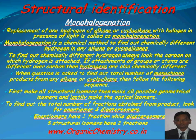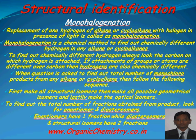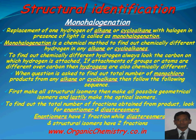Third, monohalogenation: replacement of one hydrogen of an alkyl or cycloalkyl with a halogen in the presence of light is called monohalogenation. Monohalogenation is a chemical method to find out chemically different hydrogens in any alkyl or cycloalkyl. To find out chemically different hydrogens, always look at the carbon to which the hydrogen is attached. Take the example of pentane — the second carbon has 2 hydrogens, 1 methyl and 1 ethyl group. So the hydrogen at the second position and hydrogen at the third position are chemically different. If the arrangement of groups or atoms over a carbon is different, then the hydrogens are also chemically different.